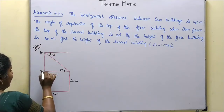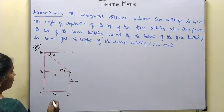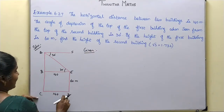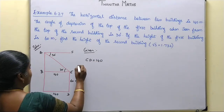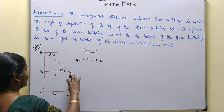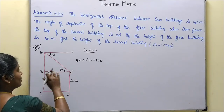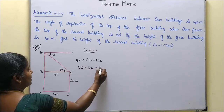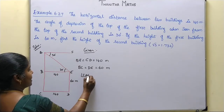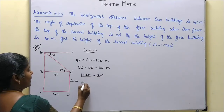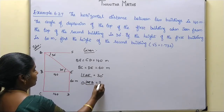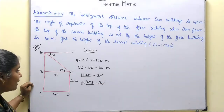Label the points A, B, C, D, E, F. Given: CD = BE = 140m (horizontal distance). ED = BC = 60m (height of first building). Angle FAE = 30 degrees (angle of depression). By alternate angles, angle AEB = 30 degrees.